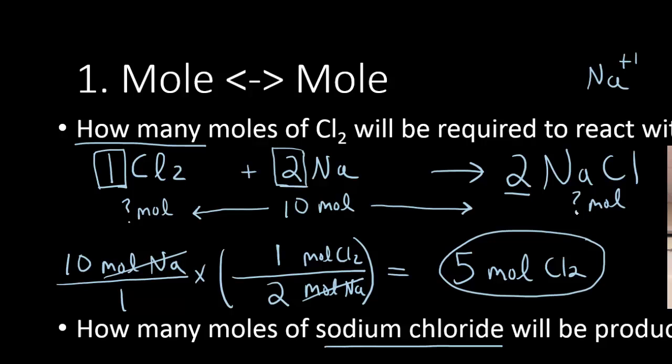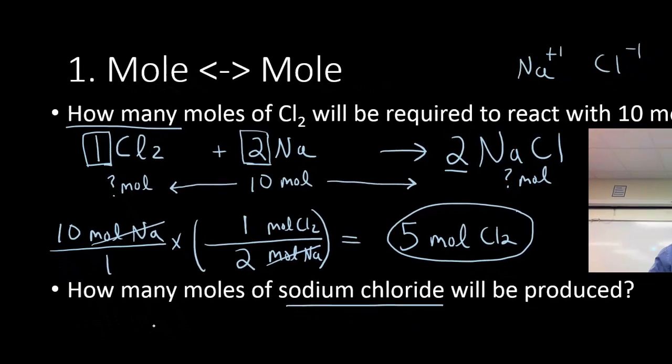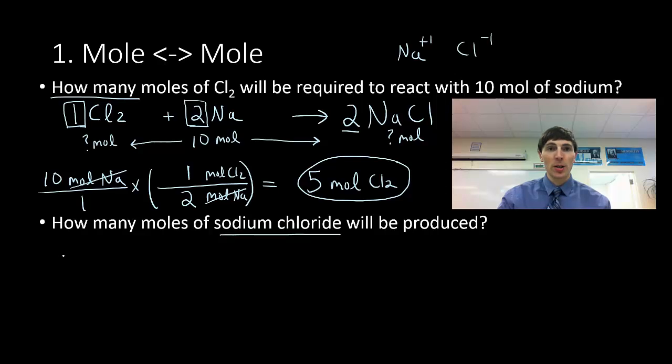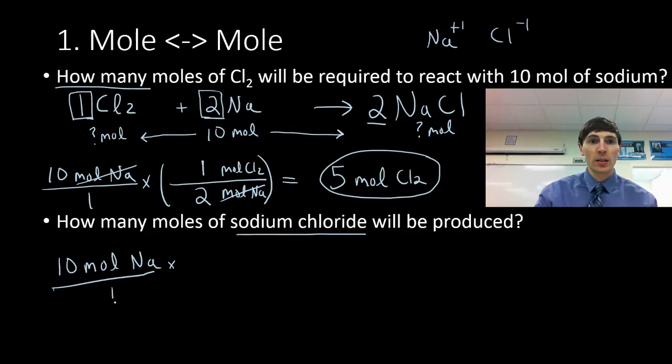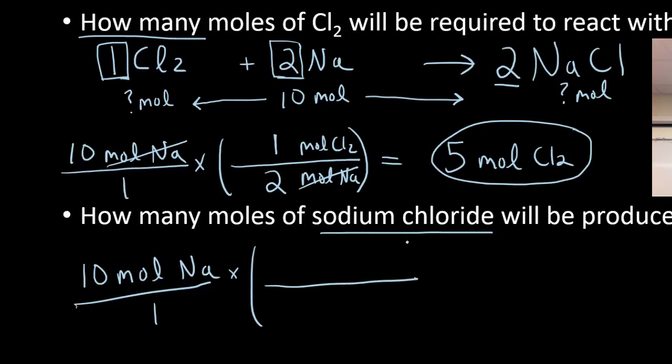Whenever I'm going from mole to mole, we're going to use the mole to mole ratio. So I take my starting quantity, same starting quantity, moles of Na. And I'm going to look up a new recipe. My recipe, I want to get rid of moles of Na. I want to get to now moles of NaCl.